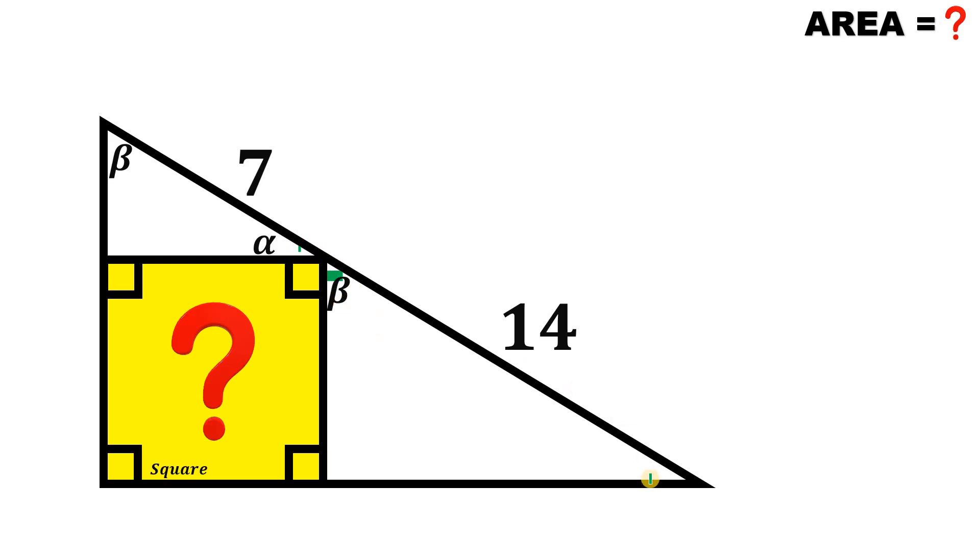Now if this is beta, this angle right over here must be equal to alpha. Therefore we can say that these two right triangles are similar to each other.